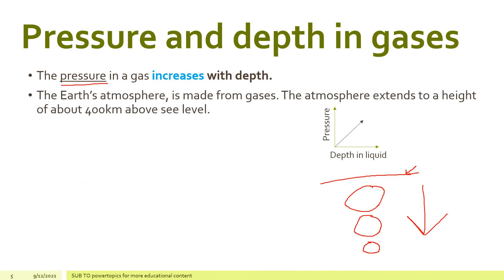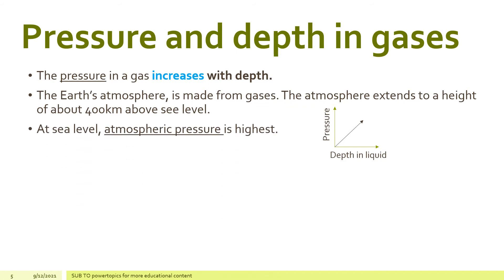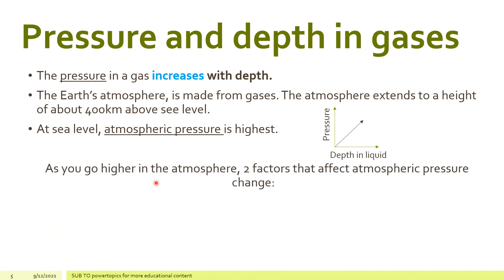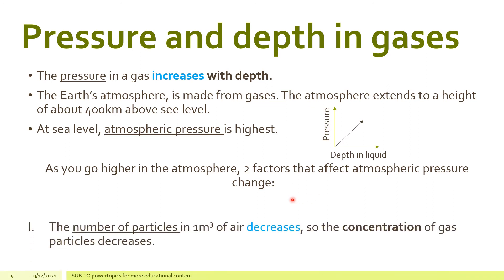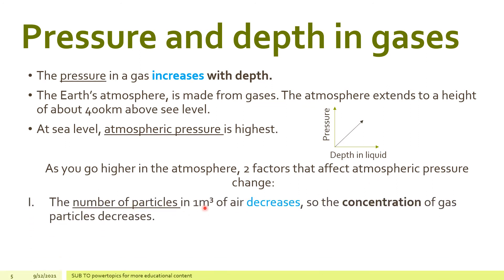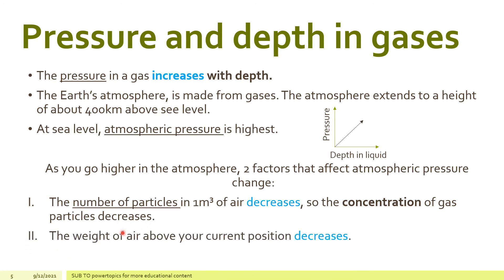The Earth's atmosphere is made from gases. The atmosphere extends to a height of about 400 km above sea level. At sea level, atmospheric pressure is highest. As you go higher in the atmosphere, two factors change: the number of particles in one cubic meter of air decreases, so the concentration of gas particles decreases; and the weight of air above your current position also decreases.